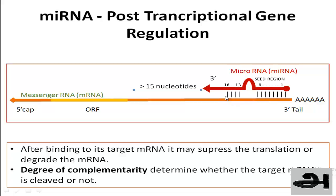It blocks the translation. Within this micro RNA, this is the seed region — there is a two-to-eight nucleotide region referred to as the seed region of a micro RNA, which is important in its function. If the complementarity is high, then the messenger RNA is degraded, but if the complementarity is less, translation is suppressed.